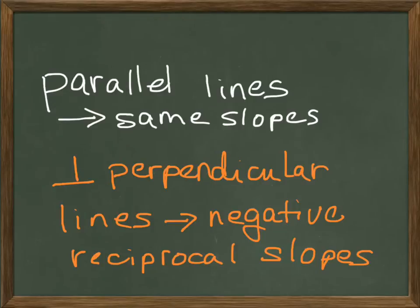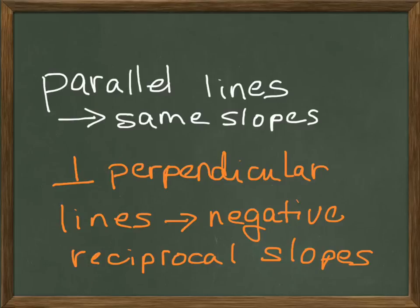As a final reminder: parallel lines have the same slope — in order to be parallel, the slopes must be equal. Perpendicular lines, the ones that meet at a 90-degree angle, have negative reciprocal slopes. That's your review of linear functions. If you have any questions, be sure to ask them in class tomorrow. See you then.